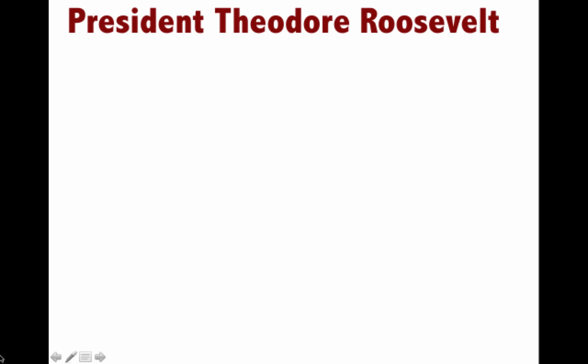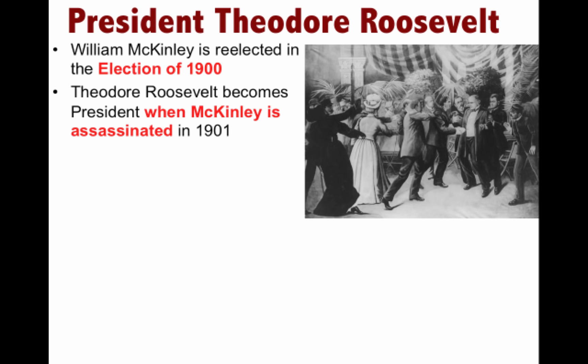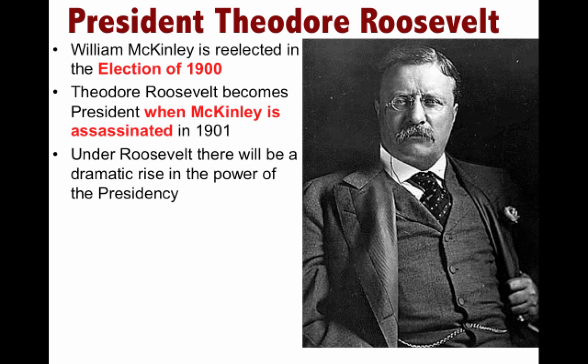McKinley was re-elected in 1900, with Roosevelt — the hero of the Spanish-American War — added to the ticket as vice president. When McKinley was assassinated in 1901, Roosevelt became president. Under Roosevelt, there would be a dramatic rise in the power of the presidency. In foreign policy, TR was going to pursue an expansionist foreign policy.